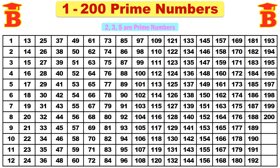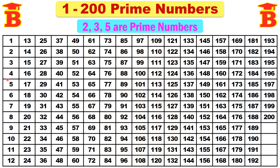Now see the first 5 numbers. We know that 2, 3, and 5 are prime numbers. So just see the first 5 numbers: 1 is not a prime, 2 is a prime number, 3 is a prime number, and 5 is a prime number.